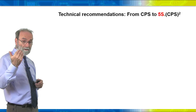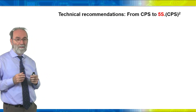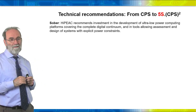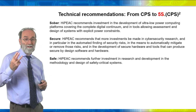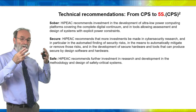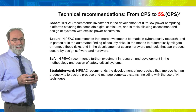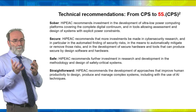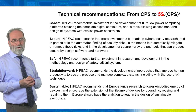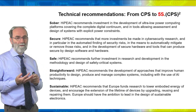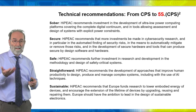The technical recommendations of the 2021 version can be summarized as moving from CPS to 5S CPS². The 5S stands for five properties modern computing systems should have: sober — energy efficient; secure — obviously; safe — especially important for cyber-physical systems controlling real-world objects; straightforward — meaning we should be able to deal with complexity, either making systems simple enough for humans or using computers to help humans manage complexity; and sustainable — considering the materials used in computer systems, whether they can be recycled and how long they will last.